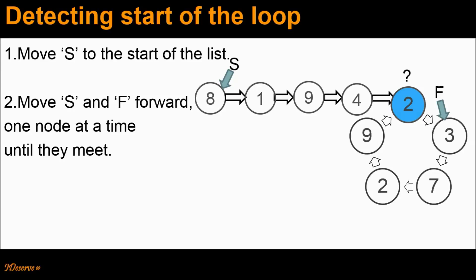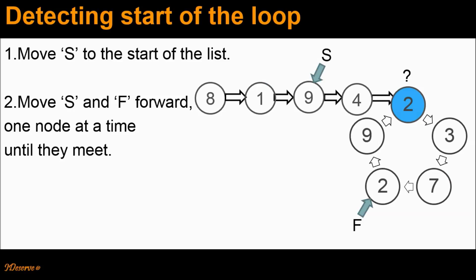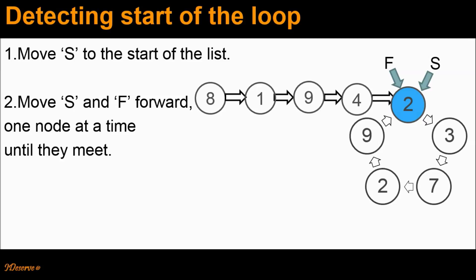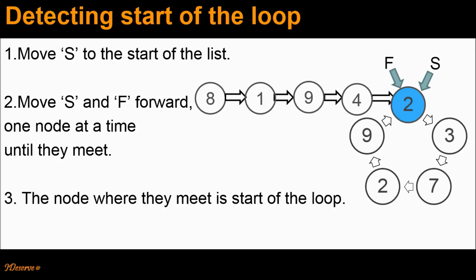Let's visualize step 2 now. S and F are both incremented by one node — they are not pointing to the same node. We again repeat: still not the same node. We again increment them by one node — no. We again increment them by one node. At this point, they are now pointing to the same node. Both S and F pointers are pointing to the start of the loop. The node where they meet is the start of the loop.